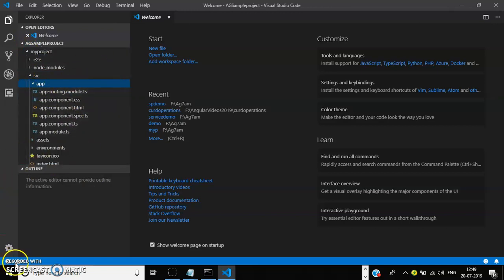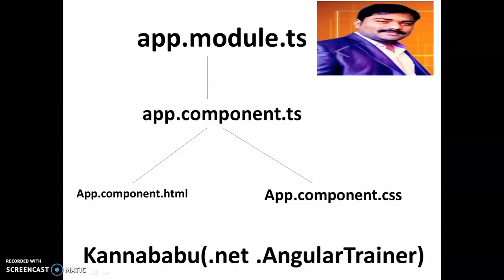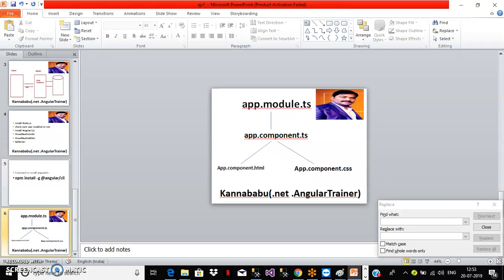First, you must know the architecture of an Angular project. Angular is a framework developed using TypeScript, and it follows component-based architecture. Your entire project is divided into multiple modules, and each module consists of multiple components. There is one root module — app.module.ts — and one root component — app.component.ts. Every TS file will have a corresponding component.html and component.css. A module also consists of services.